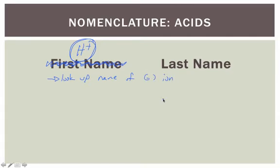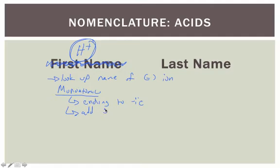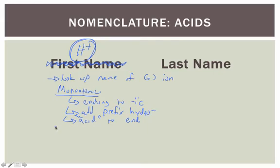The last name is always associated with what the negative ion is. Depending on the scenario, we're going to treat this in a couple of different ways. If that negative ion is monoatomic — made of only one type of ion — we're going to change the ending to -ic, add the prefix hydro-, and then add the word 'acid' to the end. If your ion is polyatomic, we use no prefix. As you'll see in our examples, the way we tell the difference between the monoatomic acid and the polyatomic acid is the presence of the prefix.